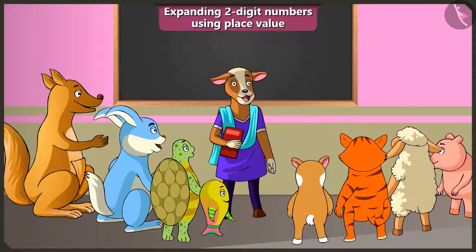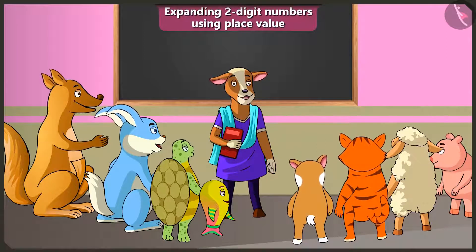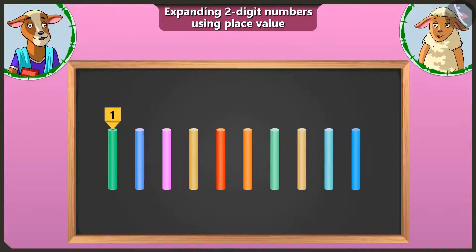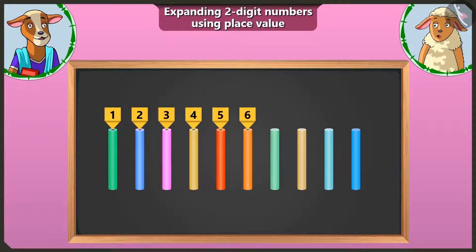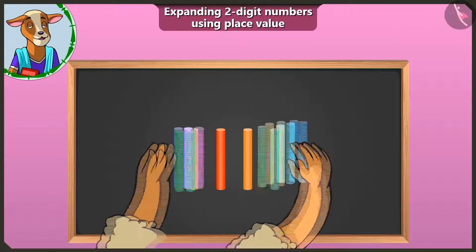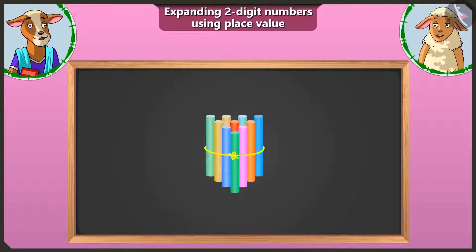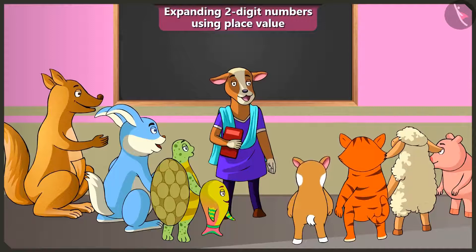Children, in the last video, you have learned to make bundles of tens. So now Lily, make a bundle of ten and show us. I will tie these one, two, three, four, five, six, seven, eight, nine and ten chalks like this here. Come on, it has become a bundle of ten. Well done, Lily.